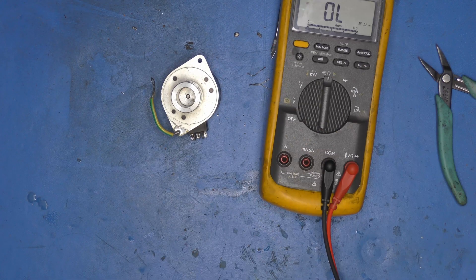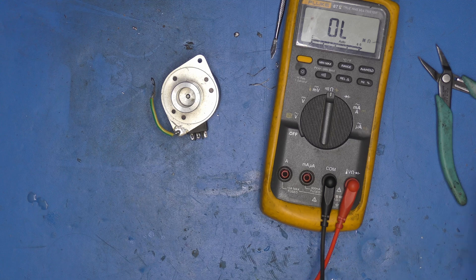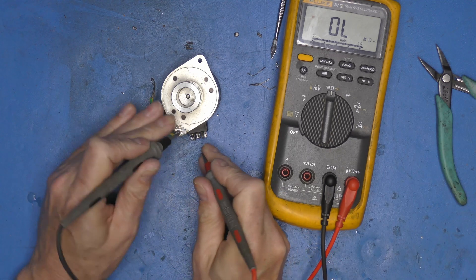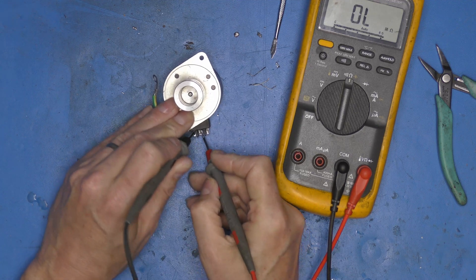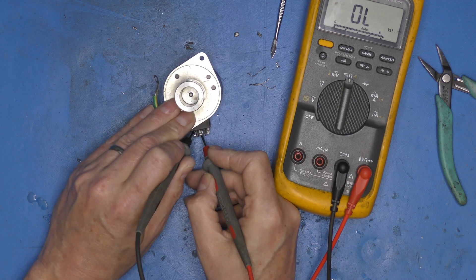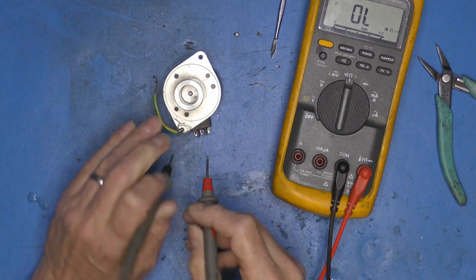Very quick sanity check to make sure we've got both windings connected. So that should measure there, which it does. That measures there, which it does. That should now be a working axis motor. Yeah, that's a bit of a result.